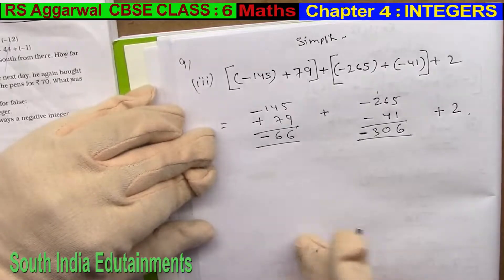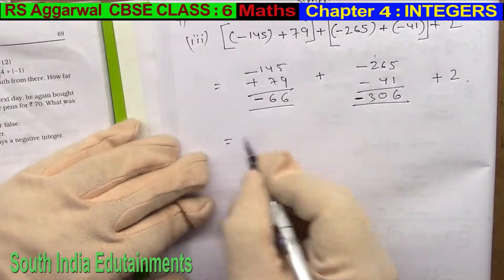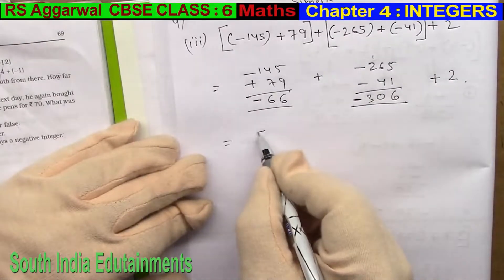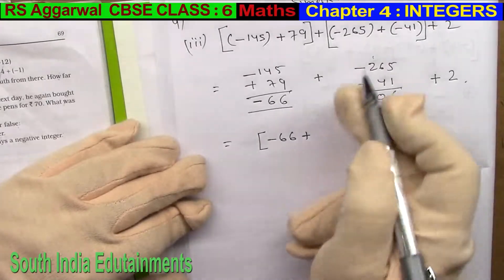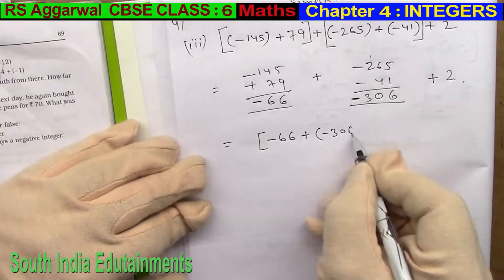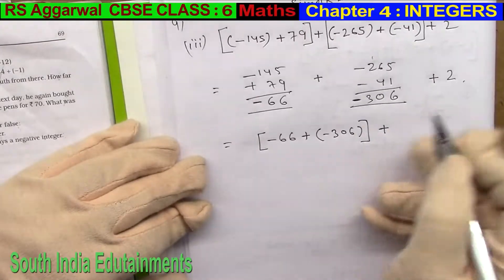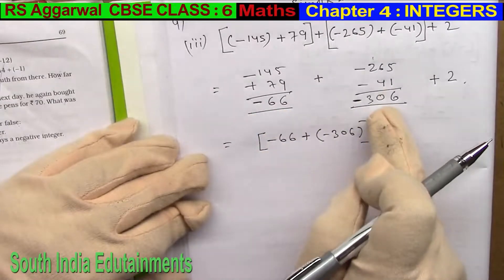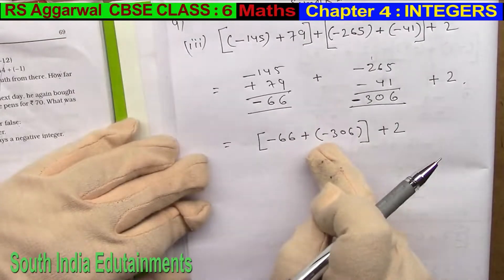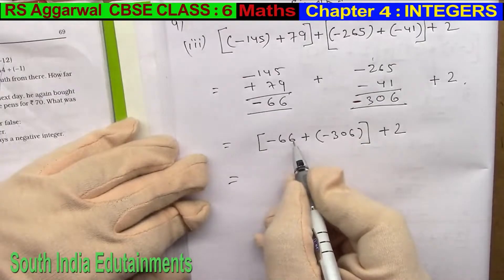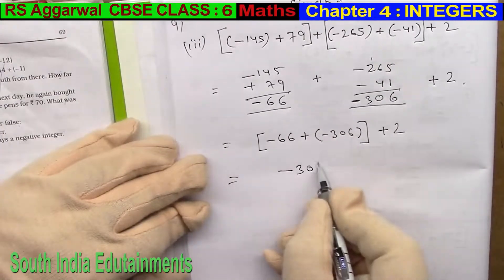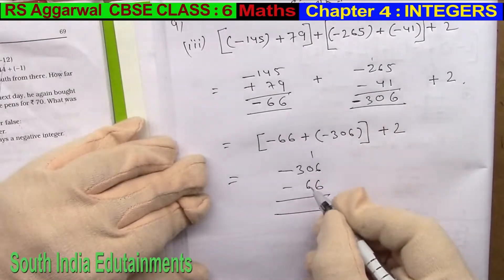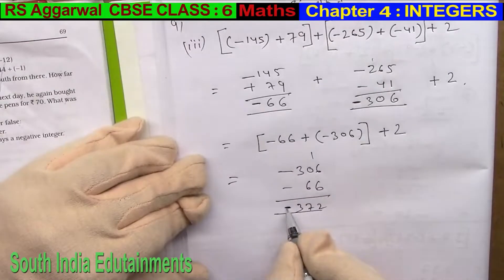So, in continuation, plus 2. This is the answer. So equal to — write the bracket: minus 66 plus, the plus symbol, bracket minus 306, bracket close. So this number: the plus sign means plus minus number, so minus 66 minus 306. So, this is minus 372.